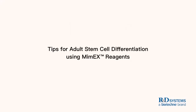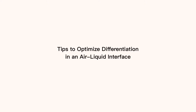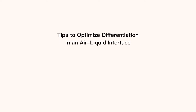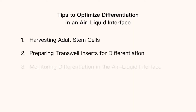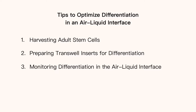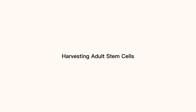Mimics tissue model systems provide a robust system to generate accessible ex vivo 3D tissue from epithelial-derived organs. This short video focuses on tips to optimize the Mimics differentiation protocol using the air-liquid interface, including helpful information on harvesting adult stem cells for differentiation, optimizing the setup of transwell inserts, and monitoring and identifying successful versus unsuccessful differentiation in the air-liquid interface system.